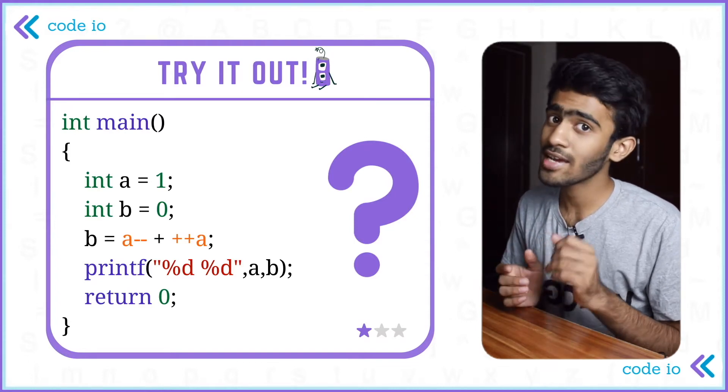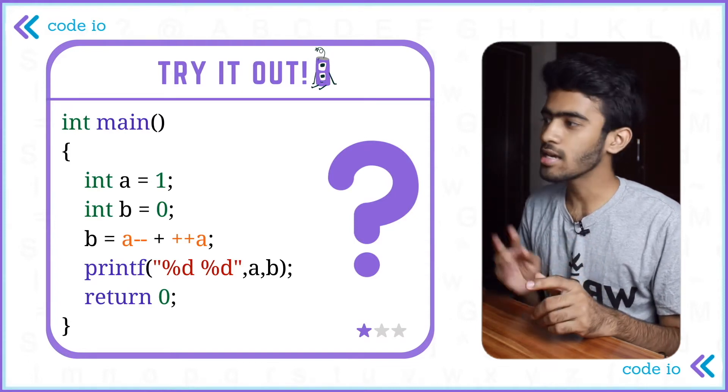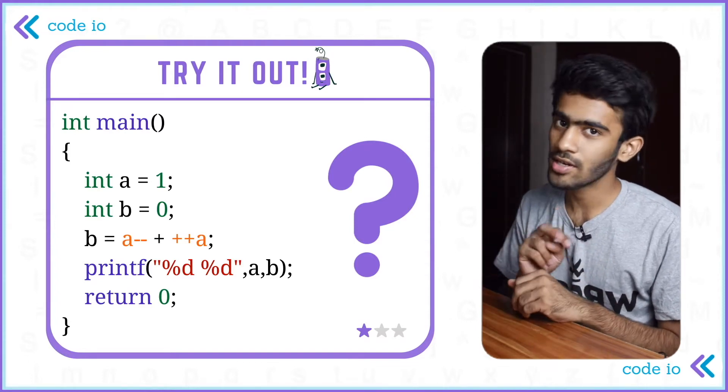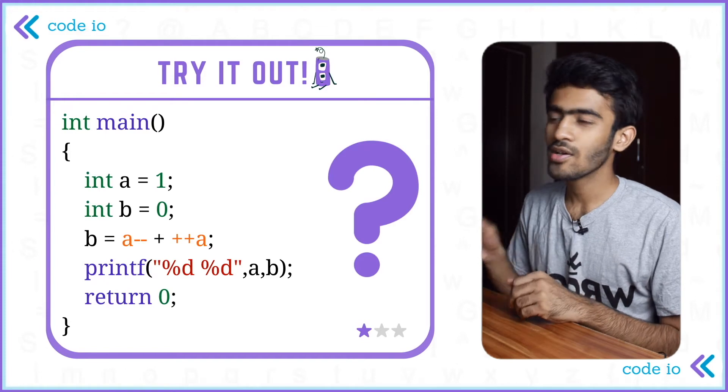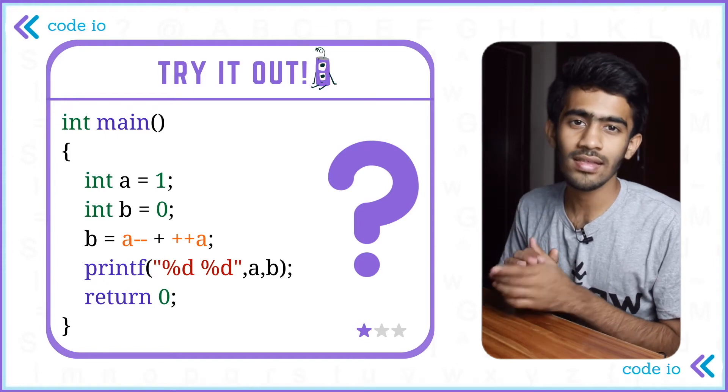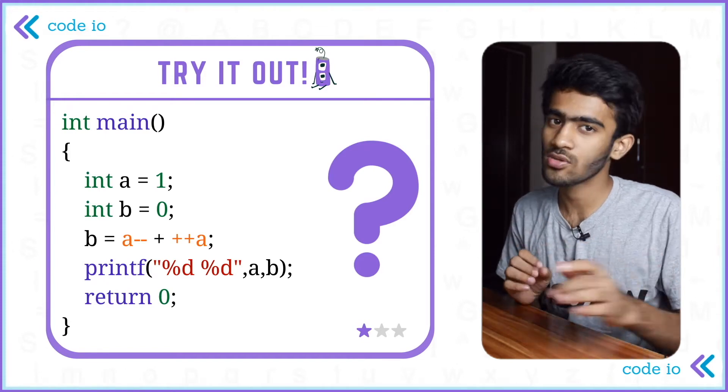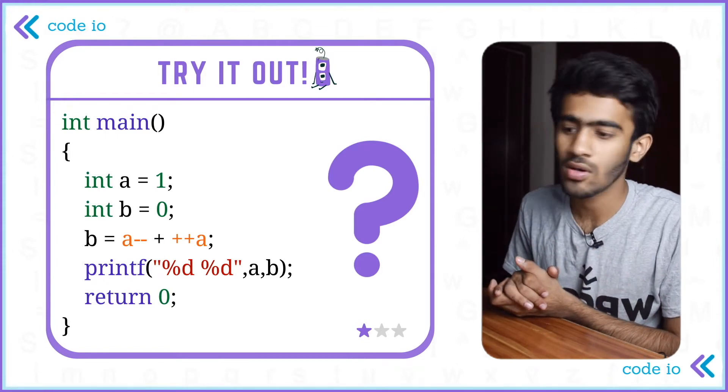And if we take the time to get a value, then b is 2. So this output is 1 space 2. That's what we print.